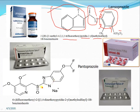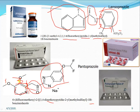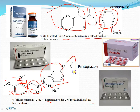For pantoprazole, the pyridine ring is substituted with dimethoxy groups at positions 3 and 4. The benzimidazole ring is substituted at position 6 with a difluoromethoxy group. The full structure contains pyridine, a methanesulfinyl chain, and 1H-benzimidazole as the core scaffold.